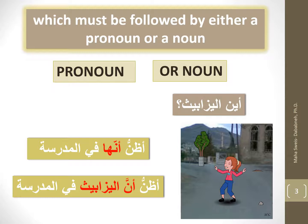You could use أظنّ followed by a pronoun, or it could follow by a noun. One more time: أين أليزابث؟ You could say أظنّ أنّها في المدرسة, or the other option: أظنّ أنّ أليزابث في المدرسة. Both answers are correct.